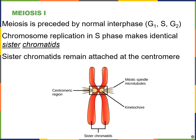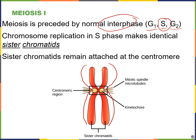Let's start with meiosis I. Just like mitosis, in meiosis we still have interphase — a normal interphase that takes place before meiosis begins — including the G1, DNA synthesis (S phase), and G2 phases. Because we do have that DNA synthesis phase, chromosomes replicate, making identical sister chromatids. One sister chromatid and its identical copy attach to one another at the centromere, with spindle fibers attaching later on.